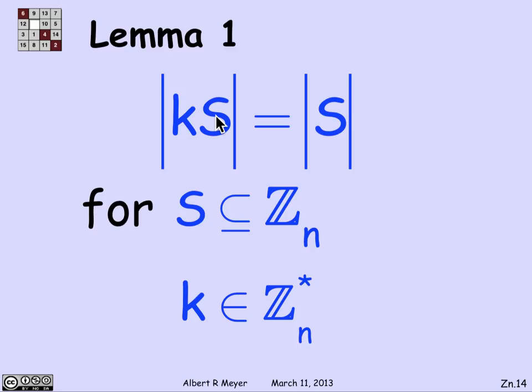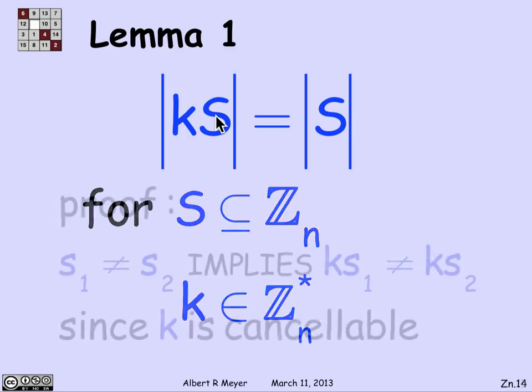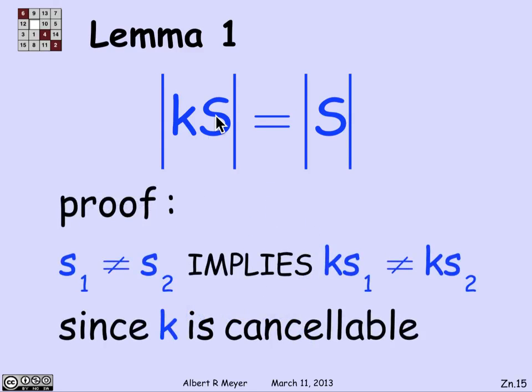Now, why is that? Well, this, of course, is only true for k that are cancelable. But the lemma is no matter what subset you take of Z_n, if you multiply every one of them by an element that's cancelable in Z_n star, you get a set of the same size. And that's clear because how could kS_1 and kS_2 be equal? Well, only if S_1 and S_2 were equal. Or another way to say it is that if you had different elements in S, S_1 not equal to S_2, when you multiply them by k, you have to get different elements of kS because k is cancelable. So that's an easy remark. Holds in general. Multiply any subset by a cancelable element, and you get a new set that's the same size.